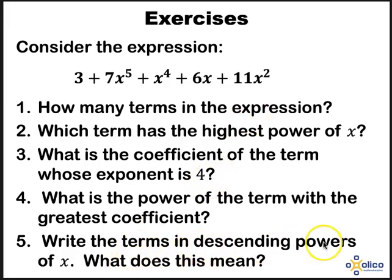Alright, firstly, descending powers, maybe you got a bit challenged by what that means. It means going down, so from the highest power of x to the lowest power of x. So your highest power of x is actually 5. Let's have a look at the answers.